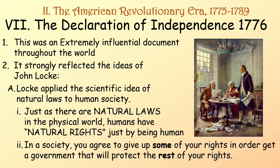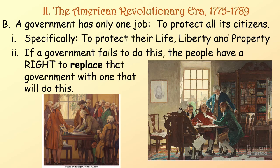The Declaration of Independence of 1776 was an extremely influential document throughout the world. It strongly reflected the ideas of John Locke. Locke had applied the scientific idea of natural laws to human society — just as there are natural laws in the physical world, humans have natural rights that they get just by being human. In a society, you agree to give up some of those rights in order to get a government that will protect the rest. The government really only has one job: to protect all of its citizens — specifically three things: life, liberty, and property. And if a government fails to do this, then the people have a right to replace that government with one that will.